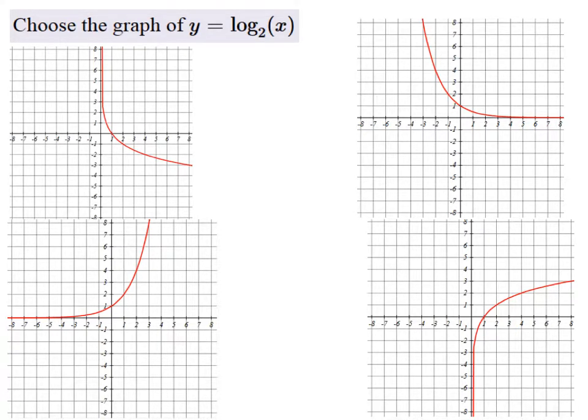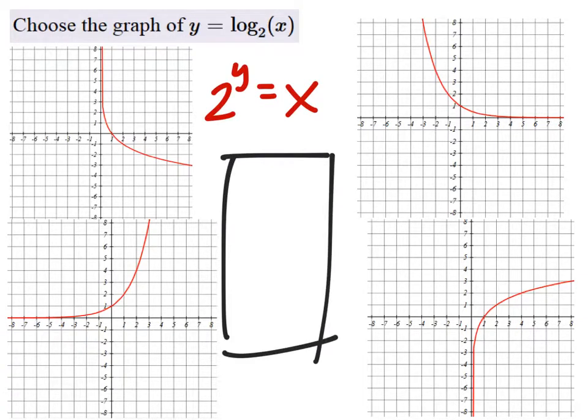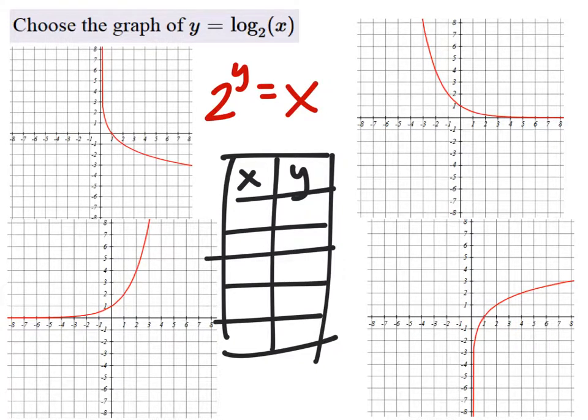Well, actually, we kind of will make a table there, but we don't have to draw it, which I'm not really very good at anyways. So this would be 2 to the power of y equals x, and that would give us this table, something like this, x and y, and we'll have a few values in here.